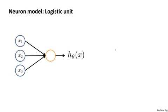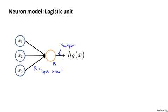In an artificial neural network that we implement in the computer, we use a very simple model of what a neuron does. We model a neuron as just a logistic unit. When I draw a yellow circle, you should think of it as playing a role analogous to the body of a neuron. We feed the neuron a few inputs via its input wires, it does some computation, and outputs some value on its output wire — the axon. This represents a computation of h(x) = 1 / (1 + e^(−θᵀx)).